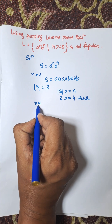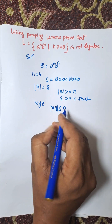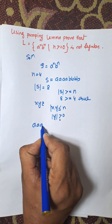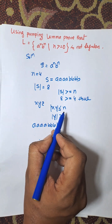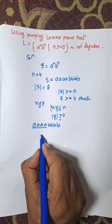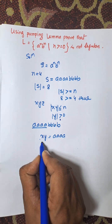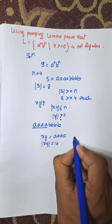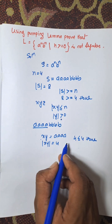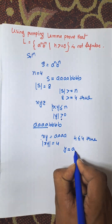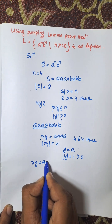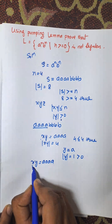Now we need to find X, Y, and Z such that the length of XY is less than or equal to n and the length of Y is greater than 0. So A is A, A, A, A, B, B, B, B. We need to consider the length of XY which is less than n. Suppose XY is A, A, A, A and length of XY is equal to 4, and 4 is less than or equal to 4 — it is true. Let Y equal to A and length of Y is equal to 1, which is greater than 0. So all conditions are satisfied. XY is A, A, A, A and Z is B, B, B, B.